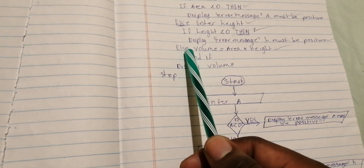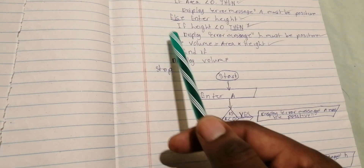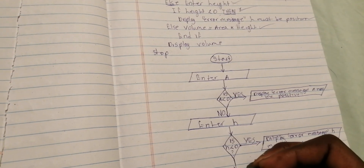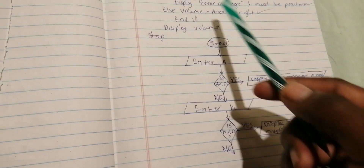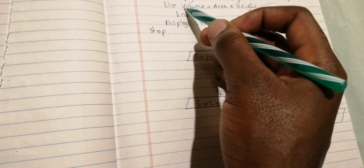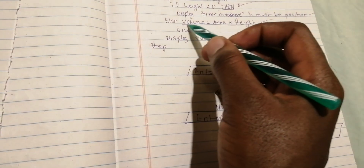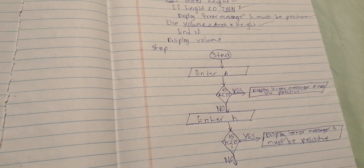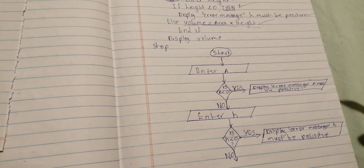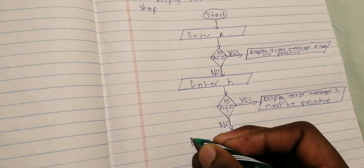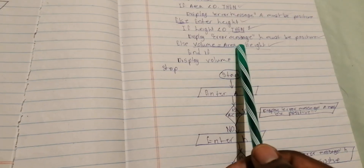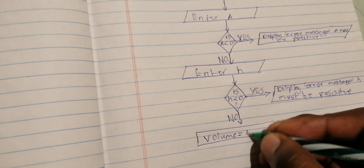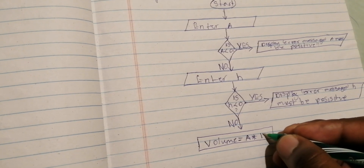The next step is 'Else', so you draw an arrow going down and label it 'No'. After that, there is a formula: 'Volume = Area × Height'. A formula is associated with a rectangle, so you draw a rectangle and inside it write: 'V = A × H'.